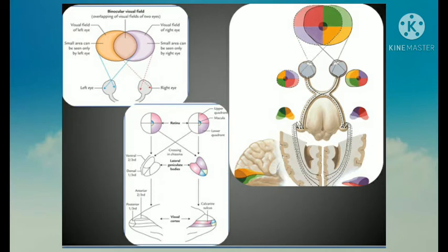Regarding the central projections of retinal areas: fibers from the right half of both retinae terminate in the right lateral geniculate body, and those from the left half terminate in the left lateral geniculate body. The visual information from the lateral geniculate body of each side is relayed to the visual cortex of the corresponding side.